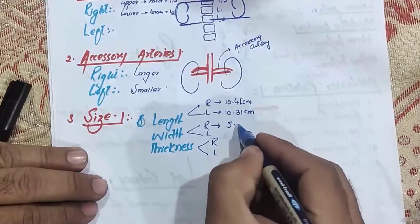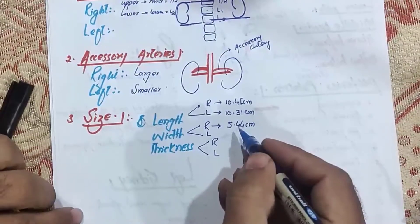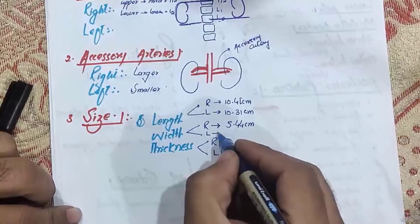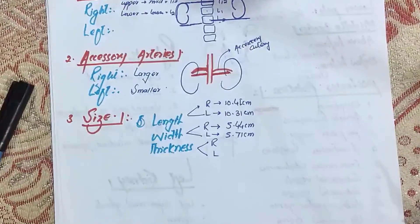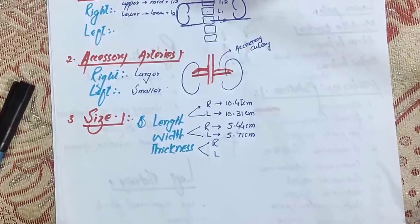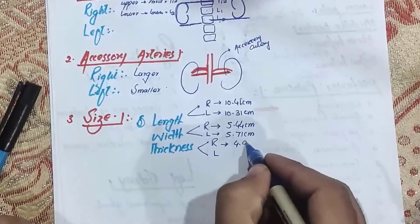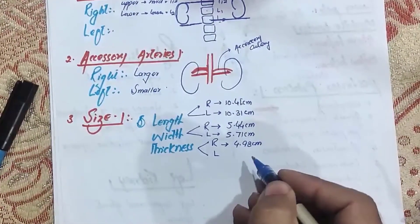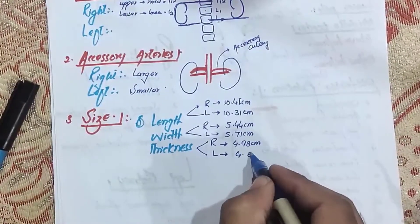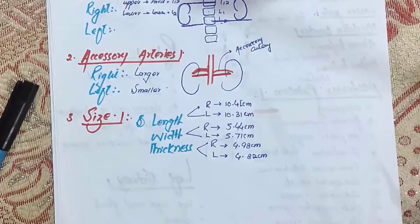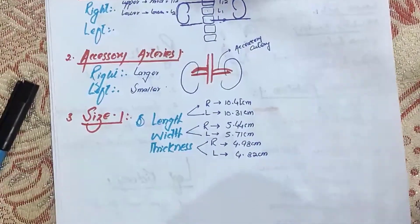The width of the right kidney is about 5.44 cm, while the width of the left kidney is a little bit more at about 5.71 cm. Regarding thickness, the right kidney measures about 4.98 cm, while the left kidney is about 4.82 cm. These are the differences in the sizes of both kidneys.